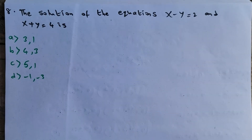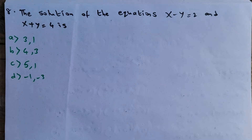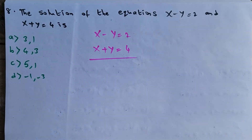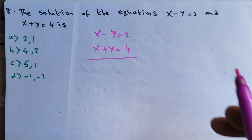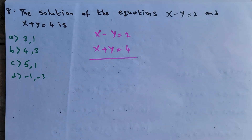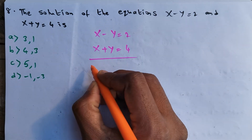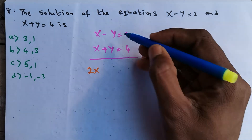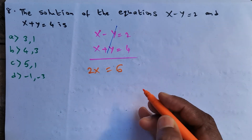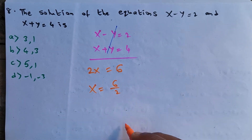Question 8: Find the solution of x − y = 2 and x + y = 4. Using the elimination method: adding both equations, x + x = 2x, −y + y cancels, 2 + 4 = 6. So 2x = 6, giving x = 3.